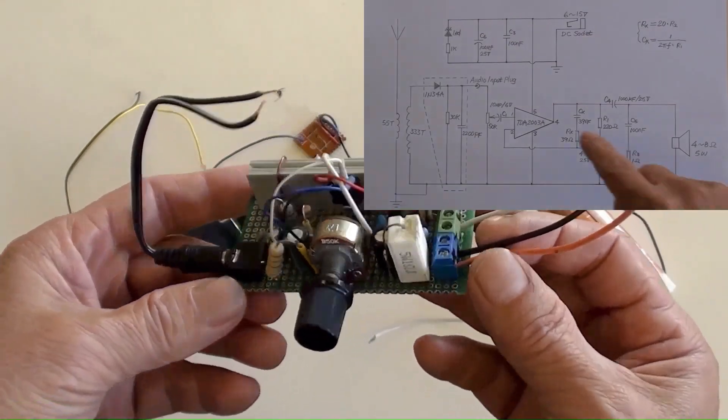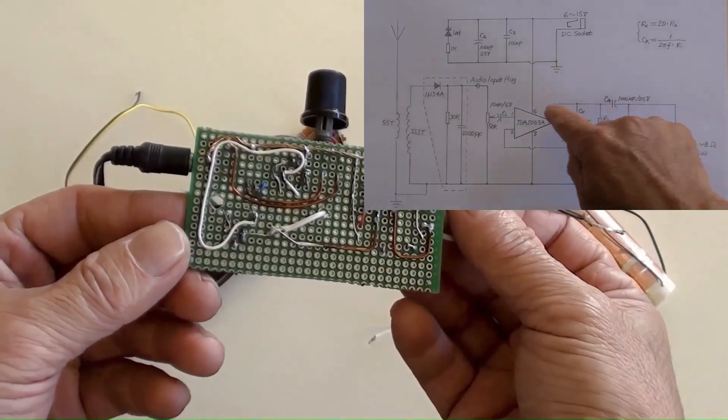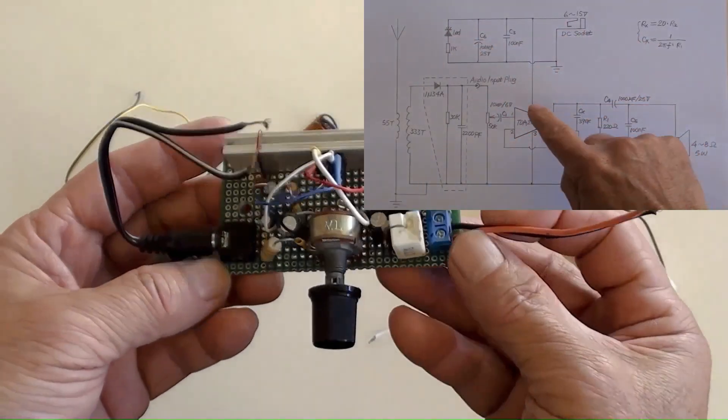A DIY amplifier of TDA2003A circuit board is here. Its parts are indicated on the diagram.